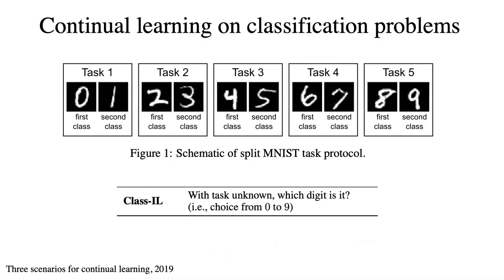Taking MNIST as an example, there are 10 classes in the dataset. We separate the dataset into five subsets, and each subset has two classes. In class-incremental learning, the model needs to do classification from all seen classes.